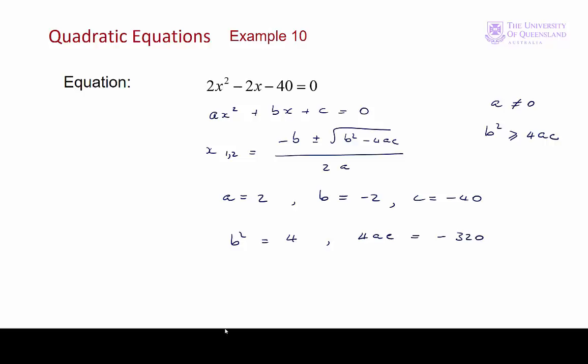a is not equal to 0. b squared is greater than 4ac, so 4 is greater than minus 320, so both our conditions are met. What we can do now is plug these values into our formula.